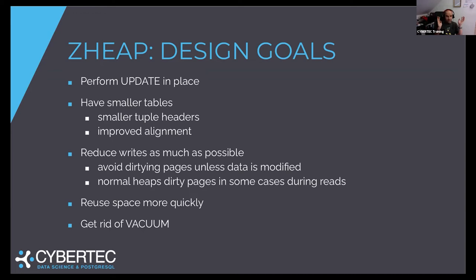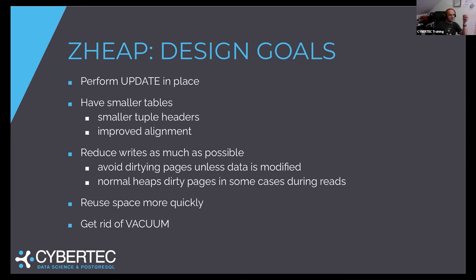There is also a huge issue around alignment. Next, we want to make sure we reduce writes as much as possible — avoid touching pages if they are not modified. This can actually happen in Postgres: a read can modify a table. We also want to reuse space more quickly. And finally, for Z-Heap, we want to get rid of vacuum entirely. That's a major, major goal — to just have a more efficient way of space reuse and re-consumption.